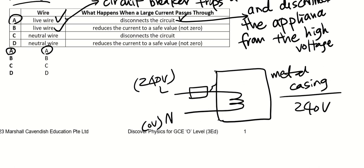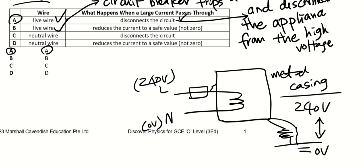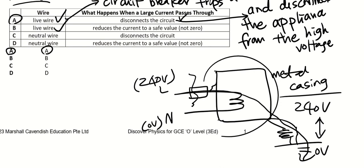Let's say this is a heater and somebody goes and touches it. The person is standing on ground. There is now a potential difference between the metal casing at 240 volts and the ground at 0 volts. So current will flow — a large current will then flow through the person. Eventually the fuse will melt, but the person already suffers an electric shock. Yes, the fuse eventually protects the appliances, but the person already got the electric shock.